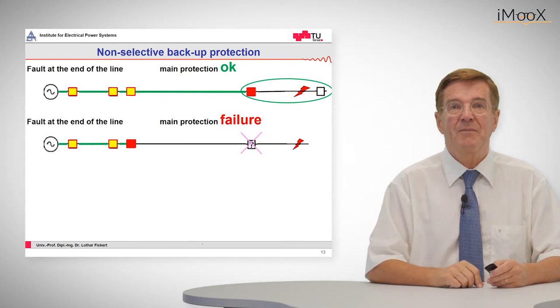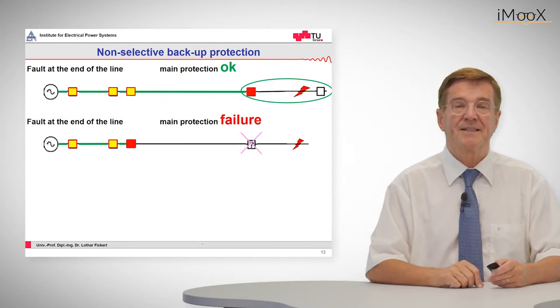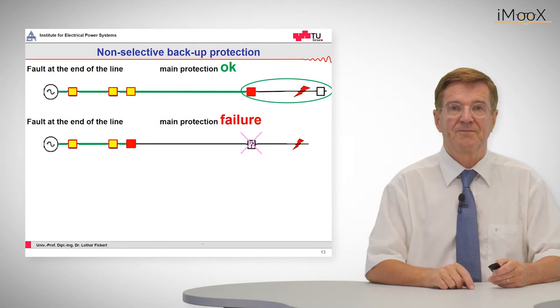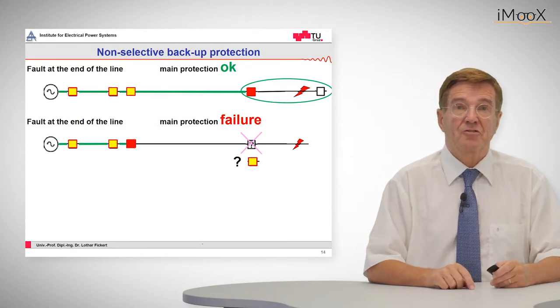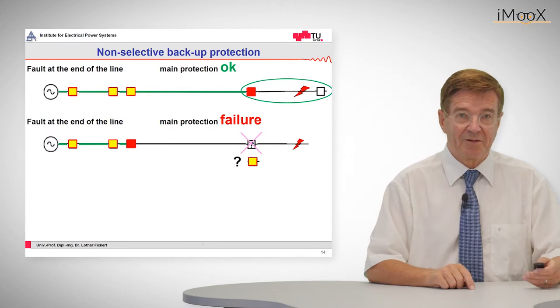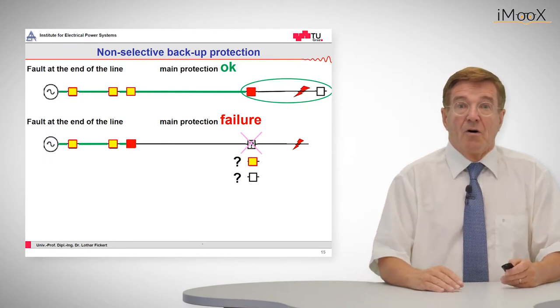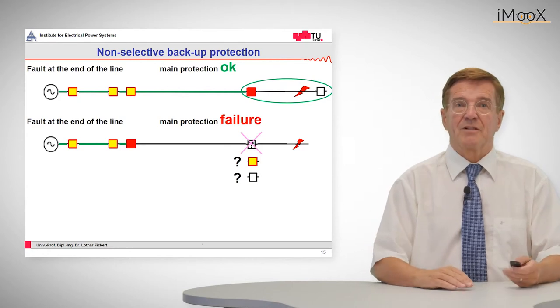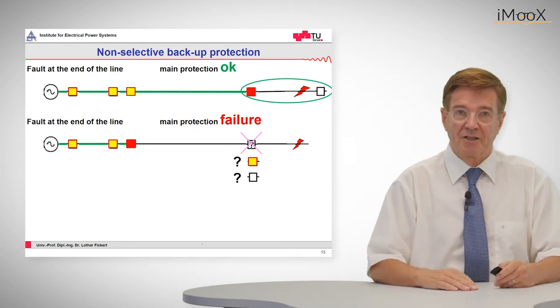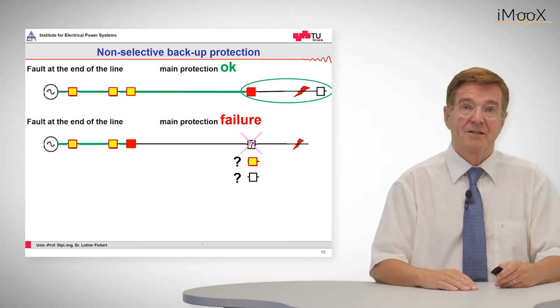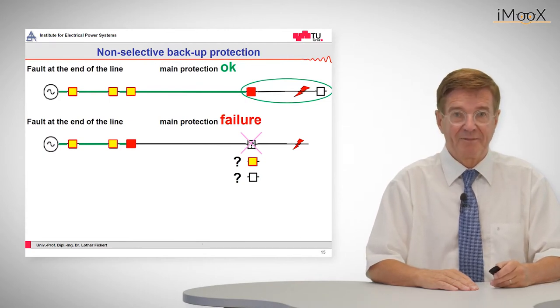But now we have a main protection failure, as indicated by these crossed arrows. Either we have a trip error, that means the relay will pick up but not effectuate a circuit breaker trip, or maybe it will not pick up at all. For example, due to shorted current terminals or failure of operation or whatever it may be.